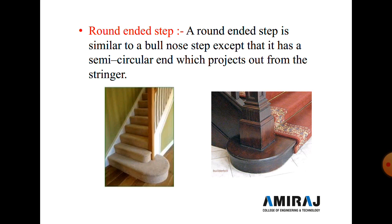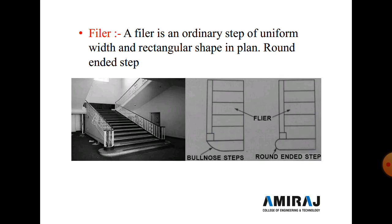The next type is the rounded end step. It is similar to the bull nose step except that it has a semi-circular end which projects out from the stringer. Generally the newel post is fixed on the rounded end step. The rounded end step is only a single step provided at the starting of the stairs. The filler is the ordinary step of uniform width with a rectangular shape in plan; it is the normal simple step provided after the rounded end step.